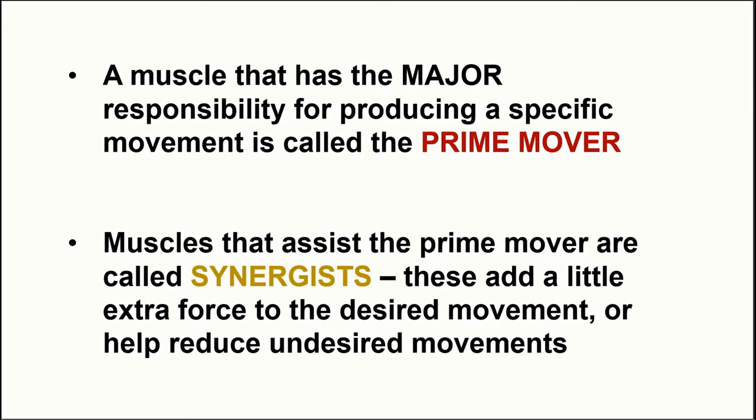Muscles with the primary responsibility for creating a specific movement at a specific joint are called prime movers. Muscles that assist the prime mover are called synergists. Synergists add extra force to the movement, particularly through a wide range of motion — acting like a gearing system, since some muscles create better forces at particular ranges of motion. Synergists also help slow down or damp any undesired movements.